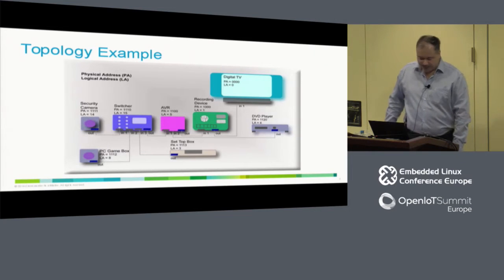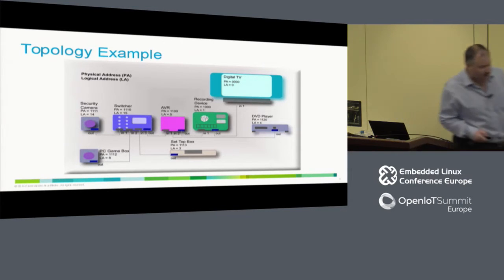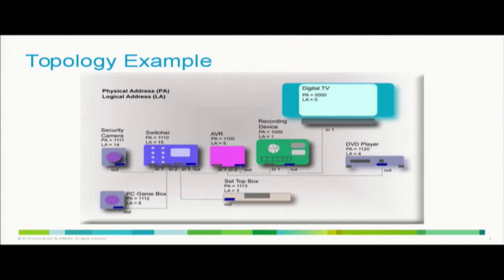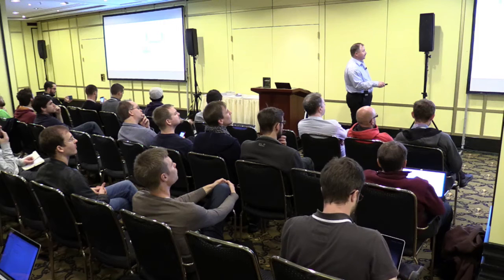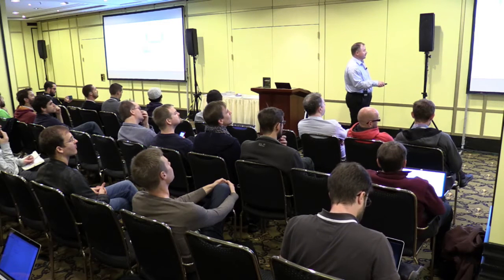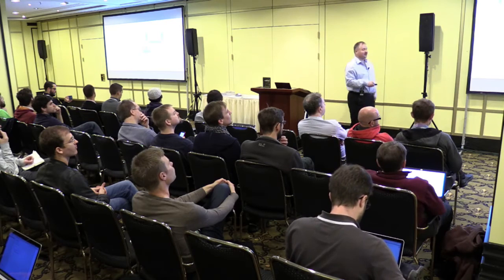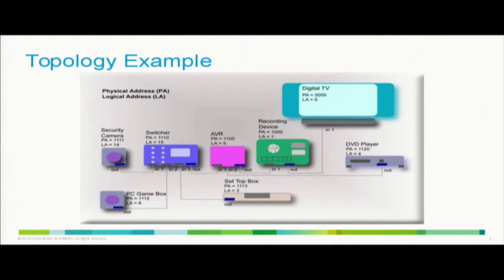In a topology example, the TV is always fixed at address zero. You can have DVD players, recording devices, AV receivers, and HDMI switches connected. That's an extreme example. What you typically have in practice is your TV, an AV receiver for your home cinema system, a Blu-ray player or DVD player, and maybe a set-top box. That's what most people have.